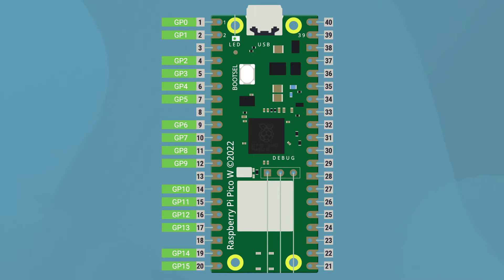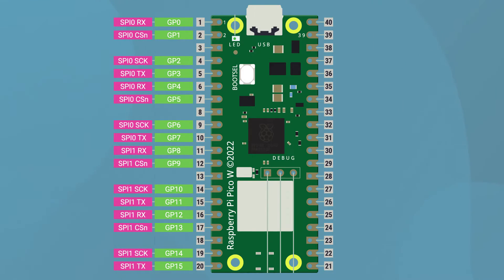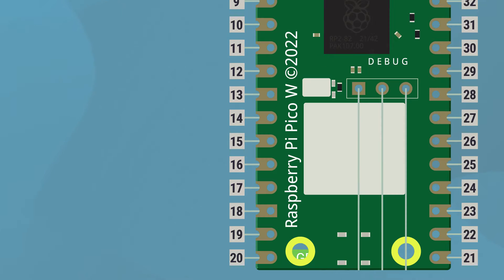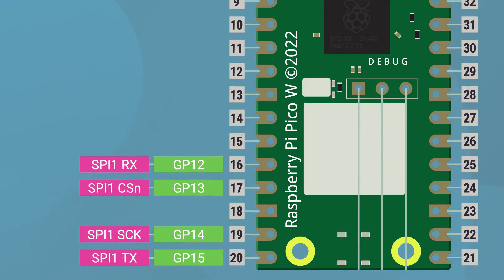Like UART, there are two SPI peripherals we can use: SPI 1 and SPI 0, and there are multiple GPIO pins we can use to access that hardware on the Pico. You'll probably need to check a Pico pinout because nearly every single GPIO pin can act as one of the four required SPI pins. For this example, we'll be using pins 12 to 15, which are connected to SPI 1.